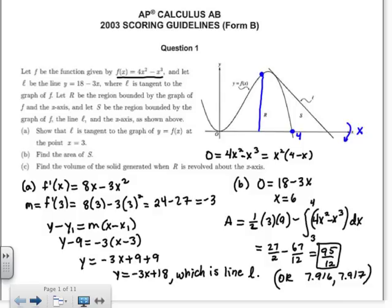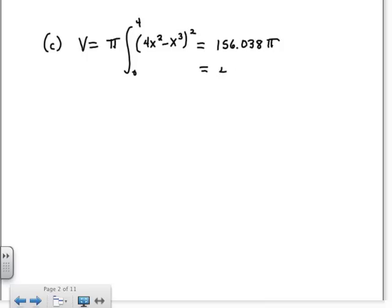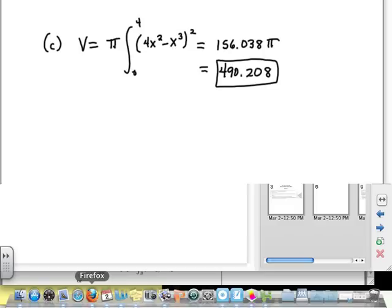So let's set this up. So part C, my volume is going to be π, my outer radius squared, from 0 to 4. Again, you can pretty quickly do this with math 9. So you get 156.038 times π, or you get 490.208 when you multiply π in. So let's see what we get different points for. Let's see if we got all of our points.